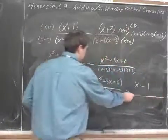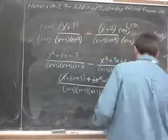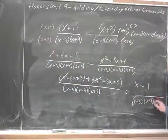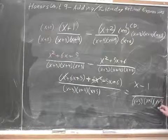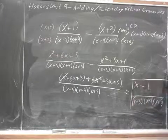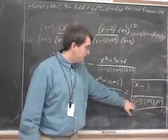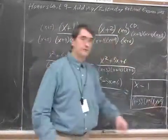So I get x minus 1 all over x plus 3, x plus 4, x plus 5. That's my answer: x minus 1 all over x plus 3 times x plus 4 times x plus 5.